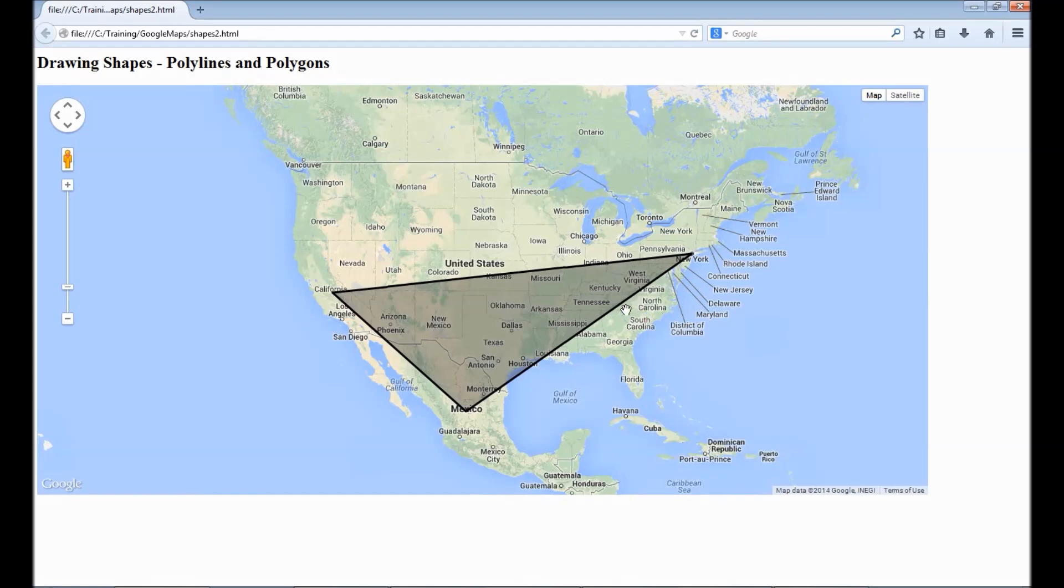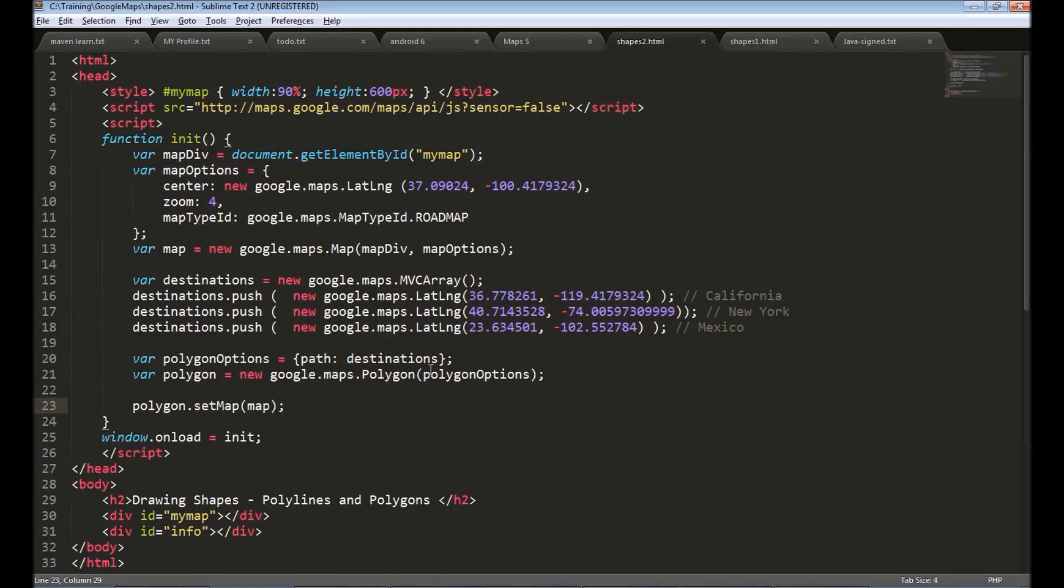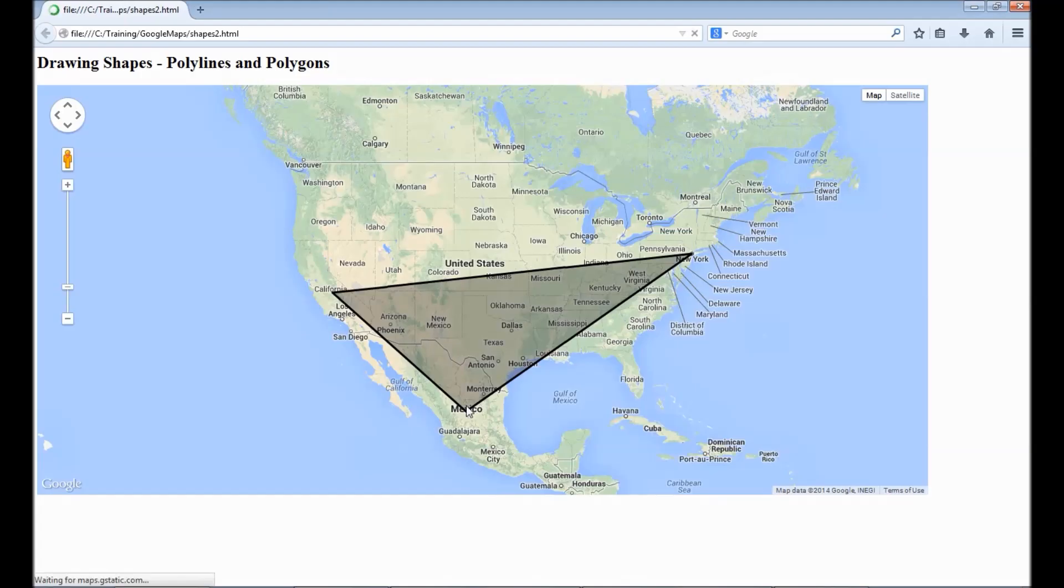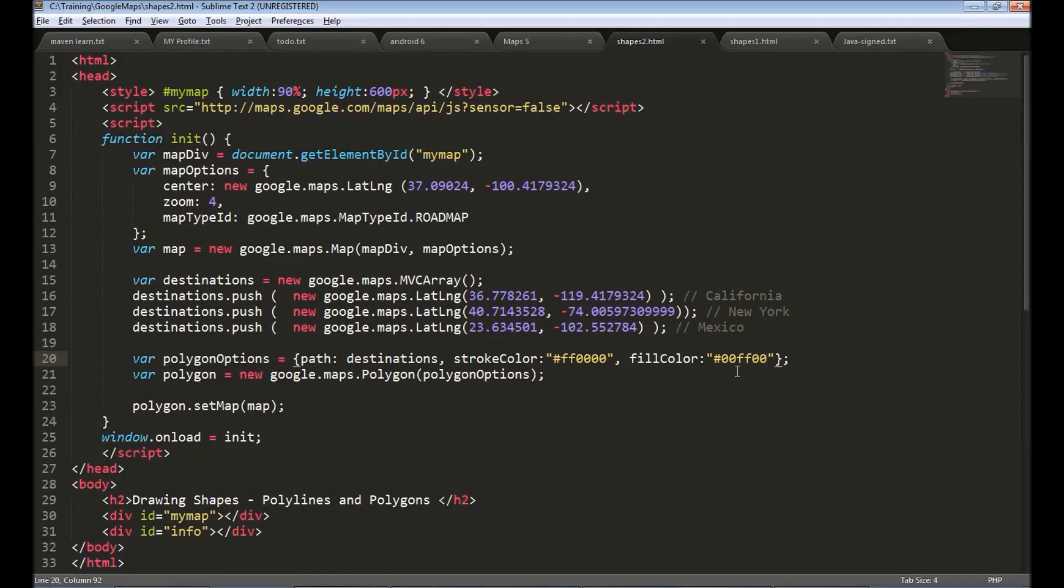You see it's the same coordinates from California to New York and Mexico. But since the polygon it completes the shape and draws a line from Mexico to California. By default this looks now it's a black color line and a kind of gray background with a fill shape. This can be customized with these options similar to polyline stroke color say red and fill color say some kind of blue let's reload green. So you can customize the colors and also opacity using fill opacity attributes.